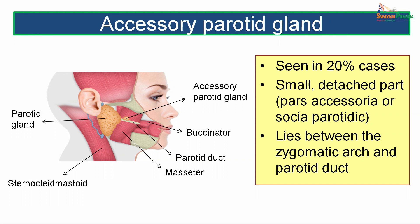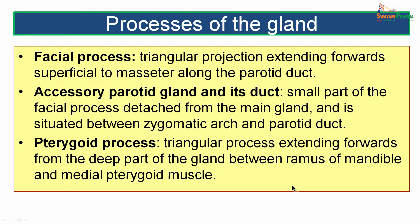Accessory parotid gland is seen in 20% of cases. This is a small detached part of the gland, also known as the pars accessoria or socia parotidis. When present, this accessory glandular tissue lies between the zygomatic arch and the parotid duct. At times there may be glandular tissue apart from the main parotid gland, which are called processes of the gland.